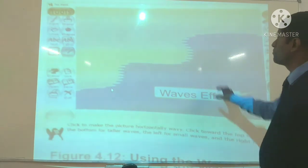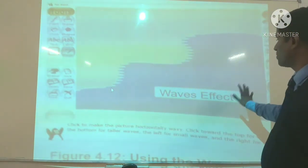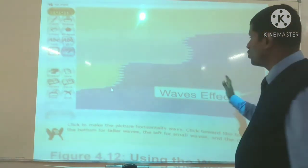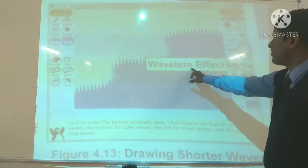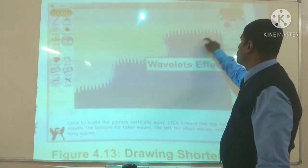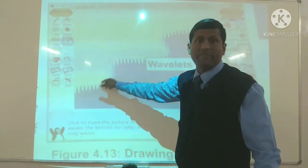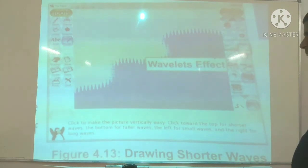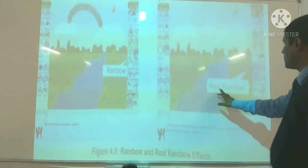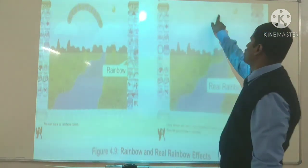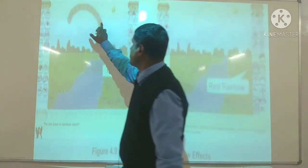Yeh waves effect hai — waves aap dekh sakte hain, yeh kuch bane hue hain yahan pe. Isko bola gaya hai waves effect, drawings mein aap isko bhi bana sakte hain. Jaise samudra ki lehrein jo aati hain, unhe yeh waves effect se banaya gaya hai. Yeh wavelets effect — kuch tezi se jo thaapede aate hain, upar neeche, woh aise hote hain — wavelets effect. Isme do tasveer dikhai gayi hain — ek hai rainbow effect, ek hai real rainbow effect. Real rainbow mein real rainbow colors aapko yahan dikhai jaayenge, aap apni drawing mein real rainbow effect dikha sakte hain.